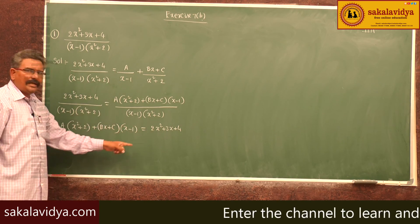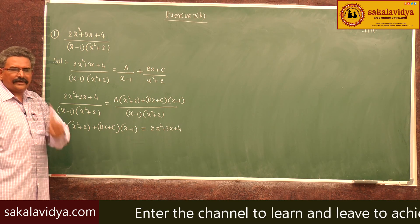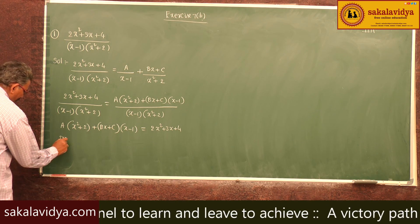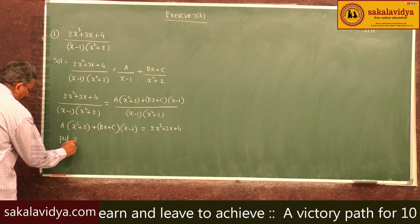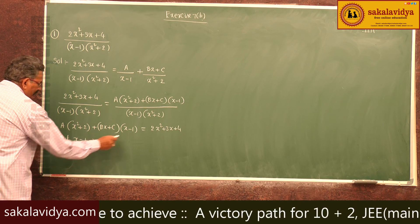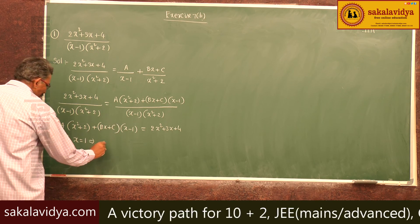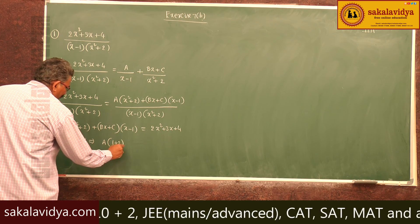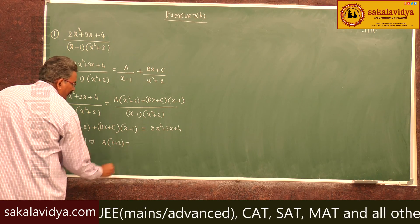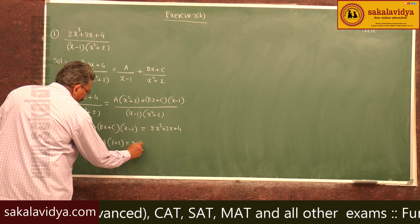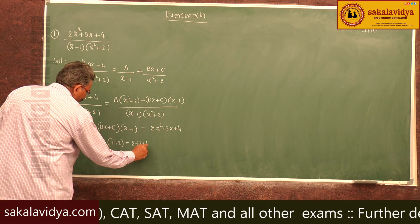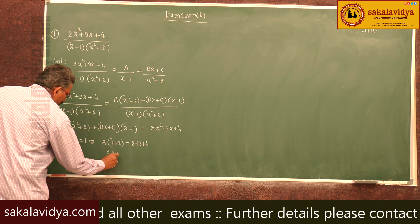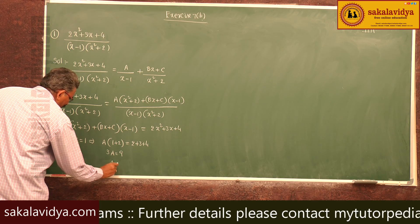Since (x - 1) is a linear factor, put x = 1. This makes (x - 1) equal to 0, so A(1² + 2) = 2(1) + 3 + 4. That gives 3A = 9, so A = 3.